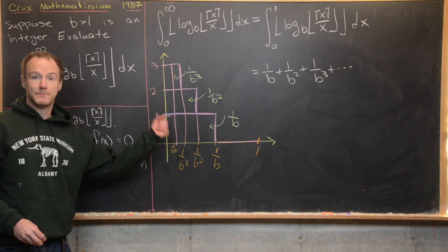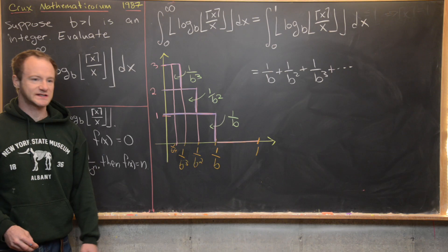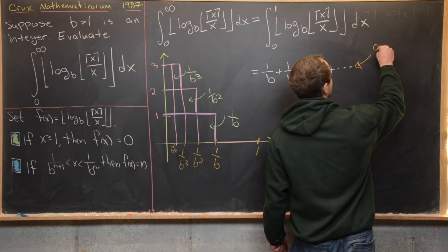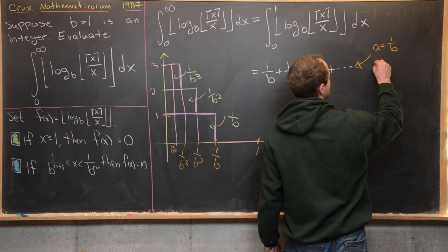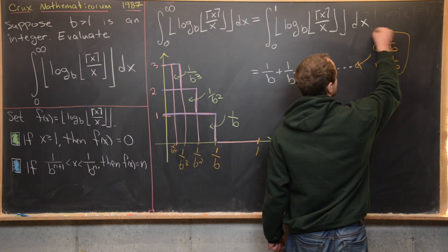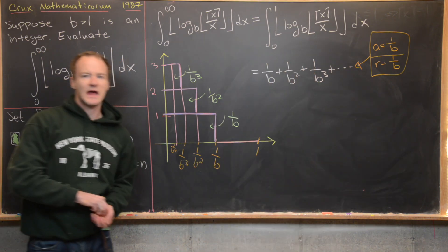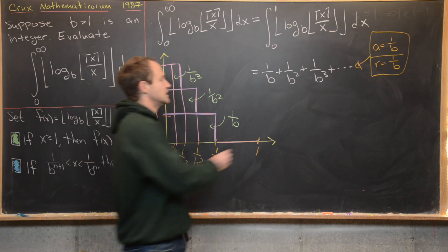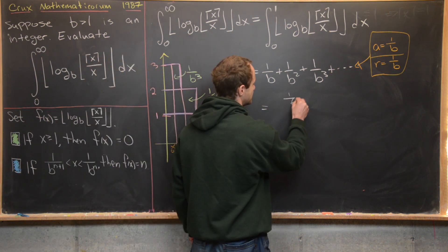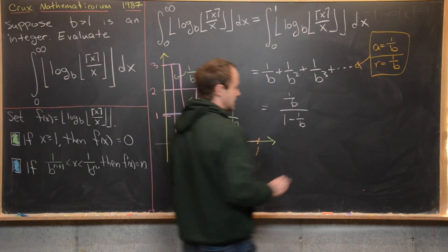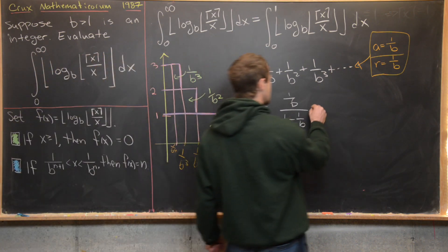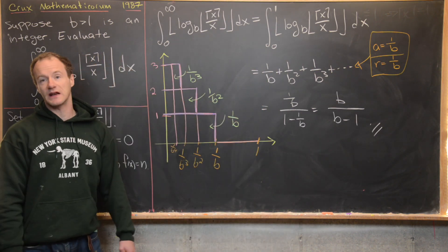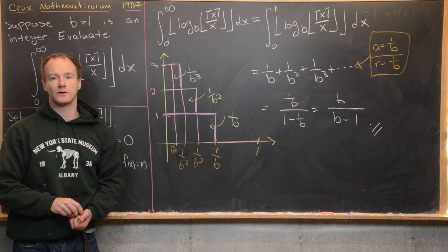This is clearly a geometric series with starting term a equals one over b and common ratio r equals one over b. Using the geometric series sum formula a over one minus r, this sums to one over b, over one minus one over b. Multiplying numerator and denominator by b gives b over b minus one. So we've calculated the value of our goal integral, and that's a good place to stop.